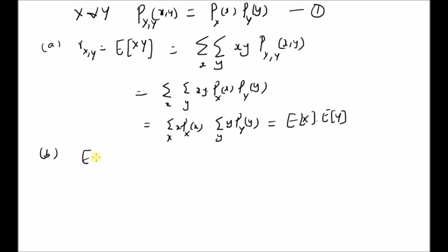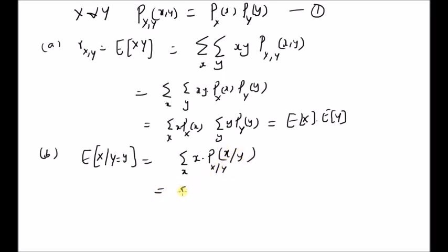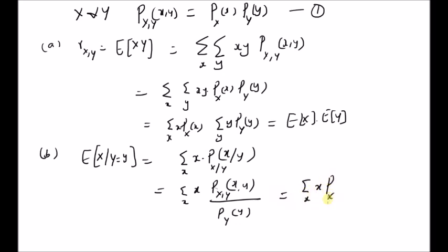The next property: we want to find the conditional expectation E[x|y], which by definition equals the summation over x of x times the conditional probability mass function. This is defined as the ratio of the joint PMF p_{x,y}(x,y) divided by the marginal PMF p_y(y). But from the independence condition, the joint PMF equals the product of the two marginal PMFs, so by cancelling the marginal function of y, we are left with the summation of x times p_x(x) — the marginal PMF of x — which is nothing but the expectation of x.